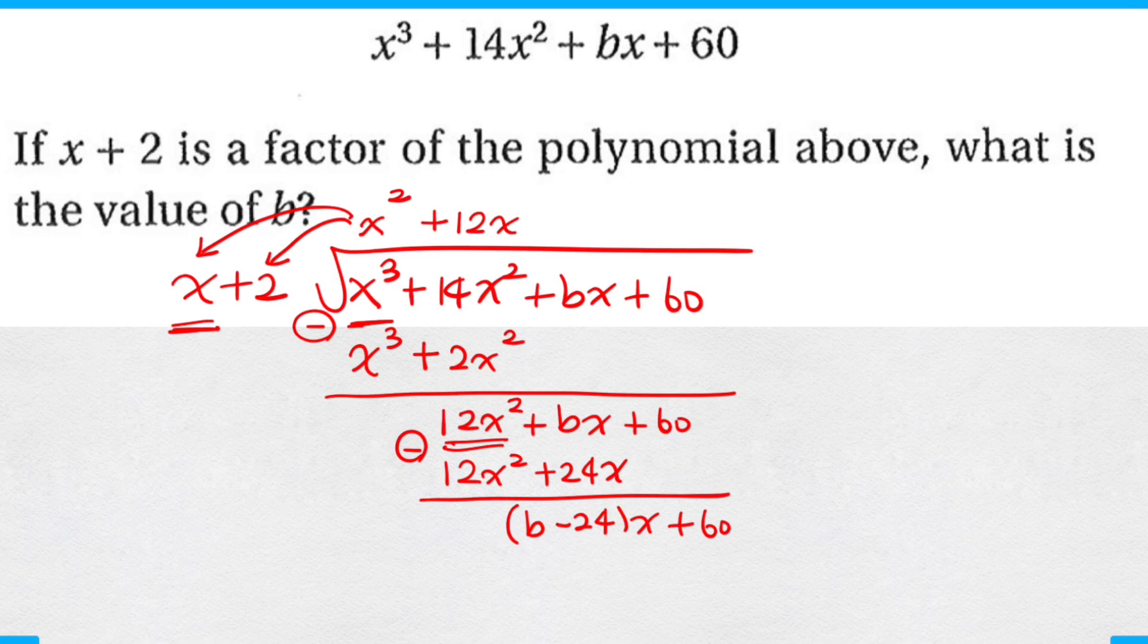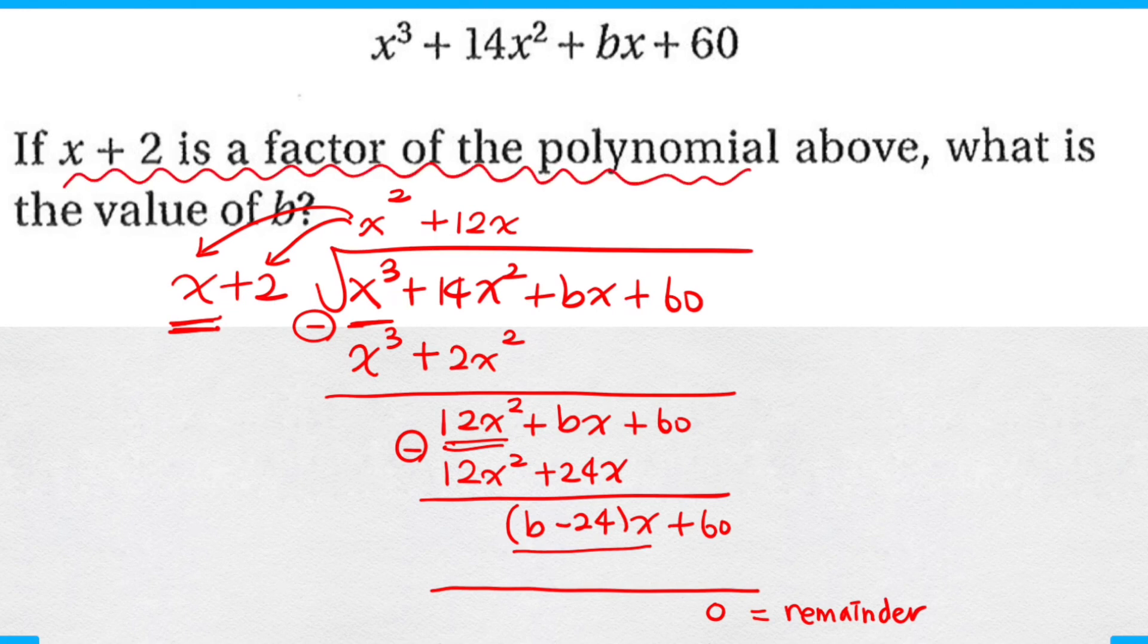Now I wouldn't know what to multiply by in order to match b minus 24 with x. However, what I know is that when I do multiply, I know my remainder is zero. Once again, I know that my remainder is zero because they tell you that x plus 2 is a factor. It means that the polynomial is divisible by the factor with a remainder of zero.